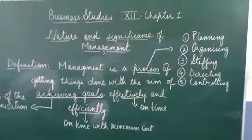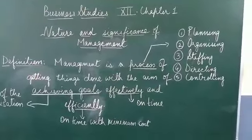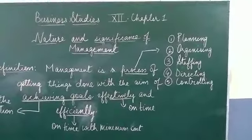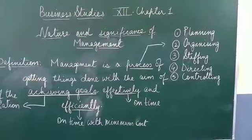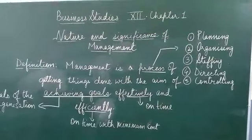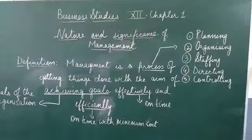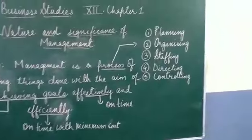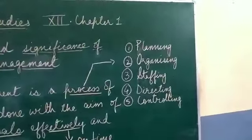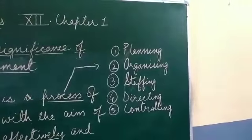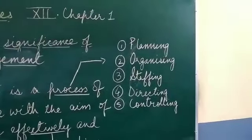In this definition there are 4 key words: Process, Achieving Goals, Effectively, and Efficiently. The very word Process means a method or activities, different activities involving work.